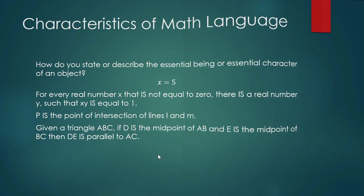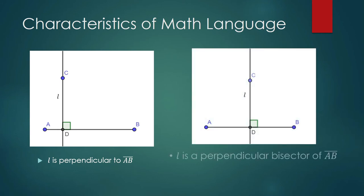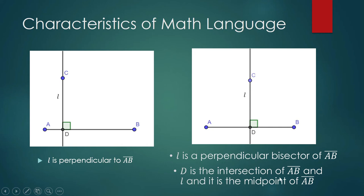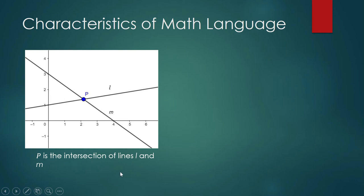Let us bring in some objects from geometry. How do you describe this line using mathematical language? 'L is perpendicular to AB.' How about this one? 'L is a perpendicular bisector of AB.' In math, you cannot use the word 'bisector' if you have not defined it yet. So if bisection has not been defined, you can say: 'D is the intersection of AB and L, and it is the midpoint of AB.' For another example: 'P is the intersection of lines L and M.'